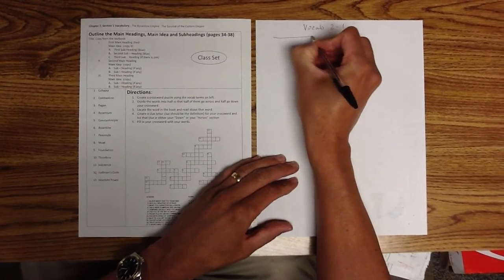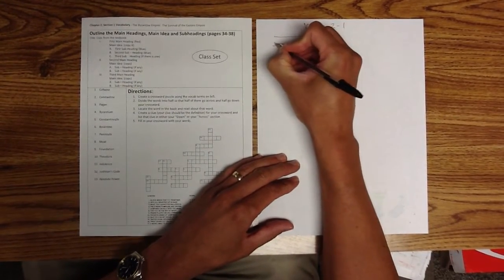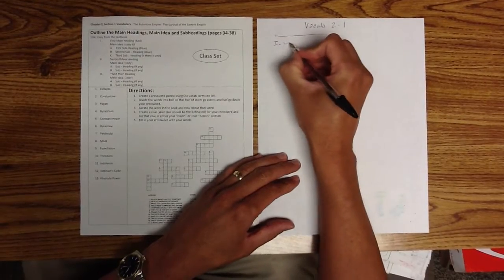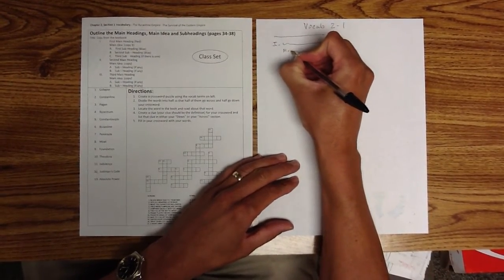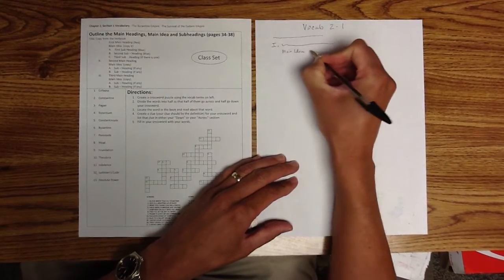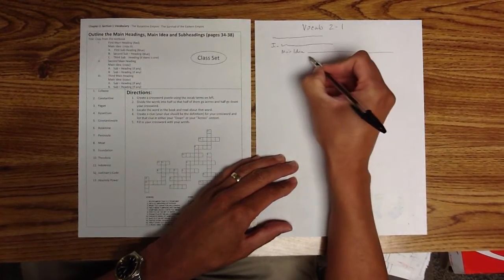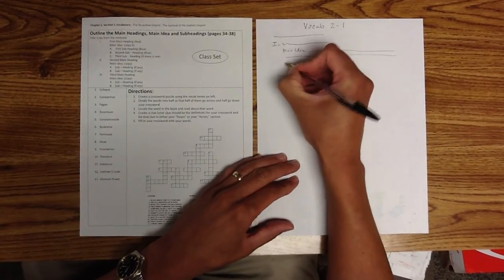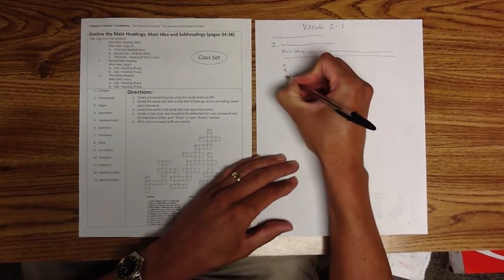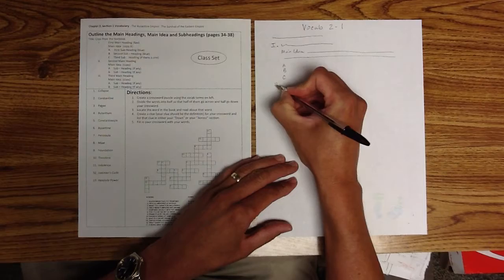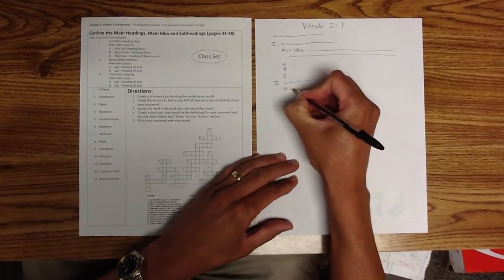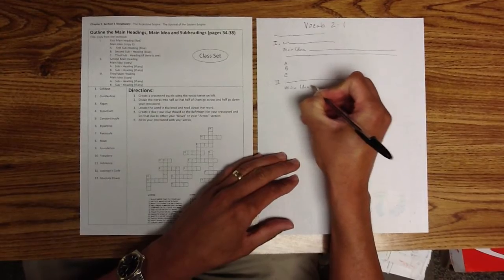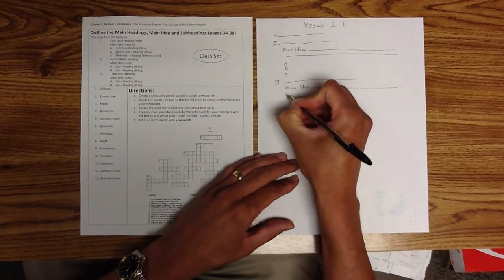Then you'll have your main title here. Then you've got your Roman numeral, first red section here. Then you've got your main idea and whatever that is. Then you've got your A, B, C, the whole thing, your second Roman numeral, your main idea, and then your A, B, C.